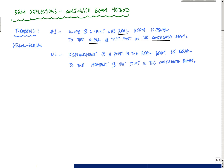What is a conjugate beam? It's like an alternative beam. The analogy I'm going to use is the real beam and bizarro beam — like real Superman and bizarro Superman. The second theorem, also by Mueller-Breslau, is that the displacement at a point in the real beam is equal to the moment at that point in the conjugate beam.